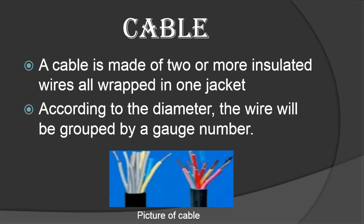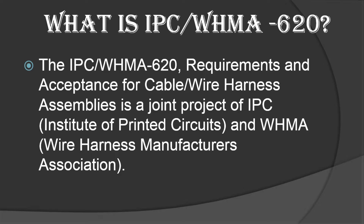Next, what is a cable? A combination of two or more wires wrapped in one jacket is called a cable. Cable can be classified into different types: LV cables, HV cables, and core cables. The type is decided based on the diameter of the cable.